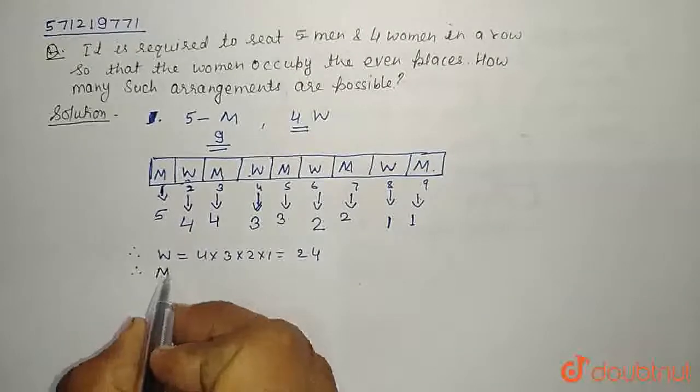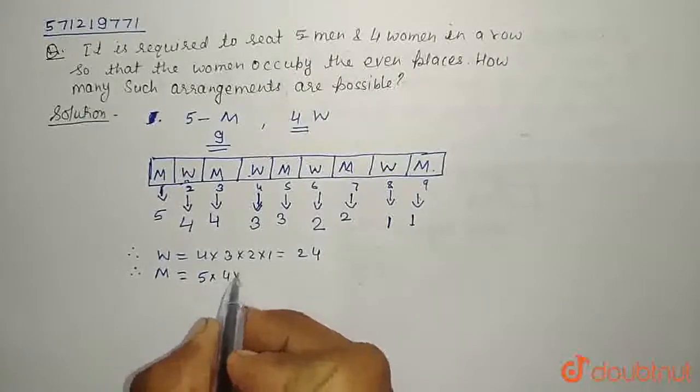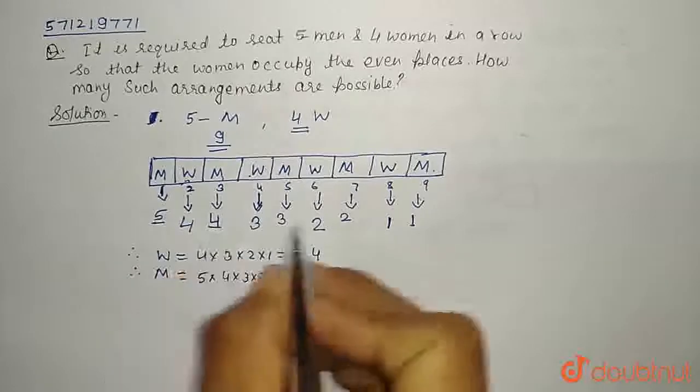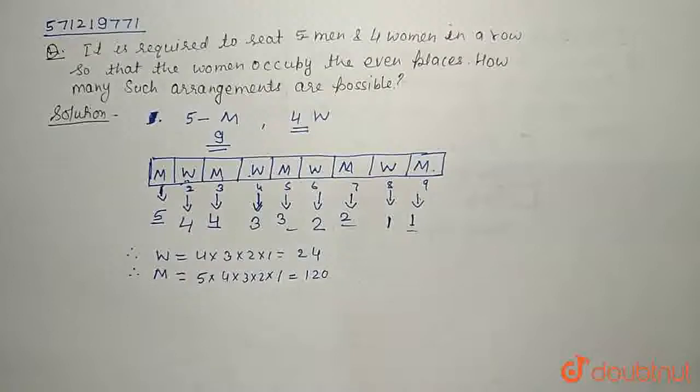Therefore to arrange 5 men in odd places, we have total 5 into 4 into 3 into 2 into 1 way, that is 5 factorial, that is nothing but 120.